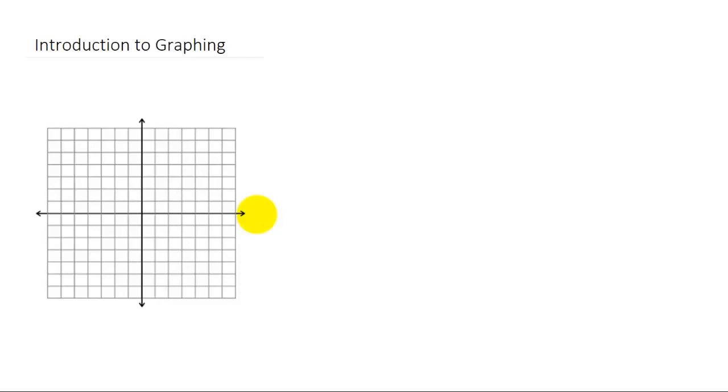What you see here is a two dimensional blank graph. There are two axes, there's a vertical axis and a horizontal axis. Most typically we'll call this axis the x-axis and the vertical axis we'll call the y-axis.